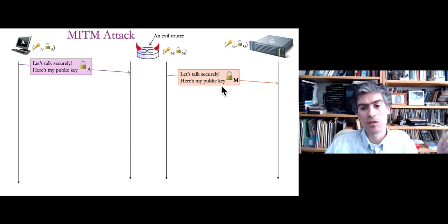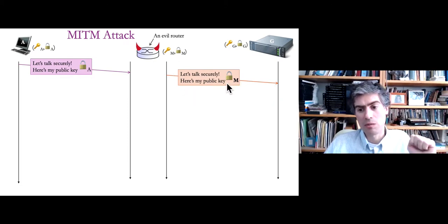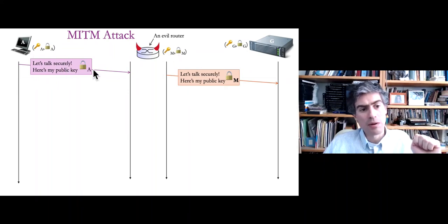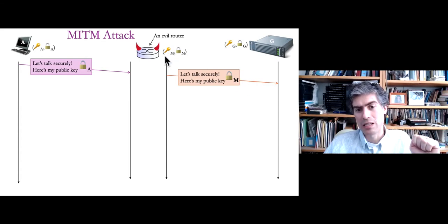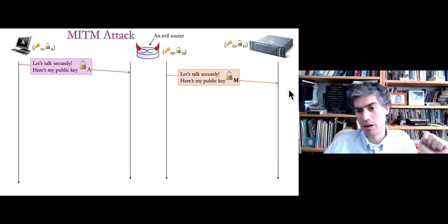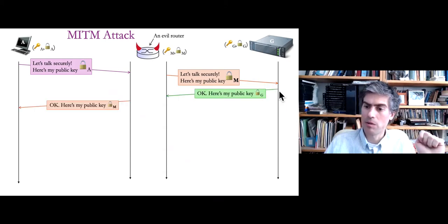The first step is to share public keys. What this man-in-the-middle has done is changed the public key to be its own public key. A advertised public key A, but the man-in-the-middle rewrote the message to actually advertise a different public key M, for which it has the private key. The same thing happens in reverse — G advertises its public key G. The man-in-the-middle tampers with the message before delivering it to A and substitutes its own public key. So now both A and G think the other person's public key is M — the public key that the evil router can decrypt.